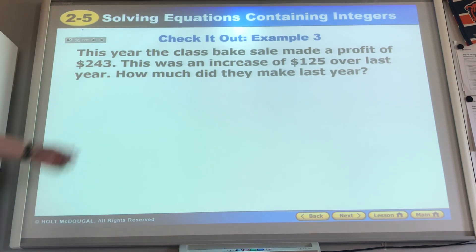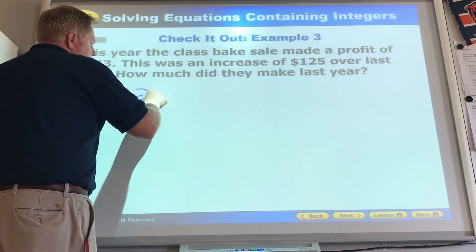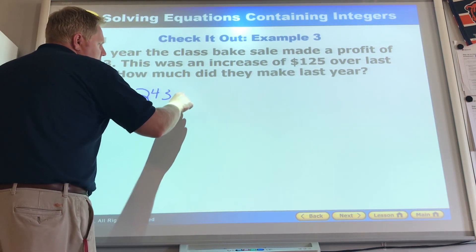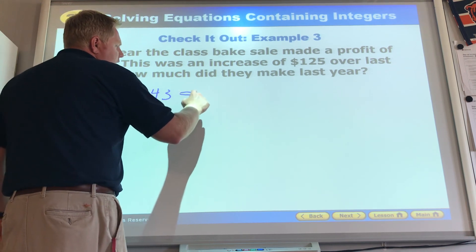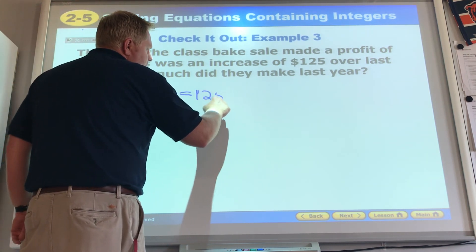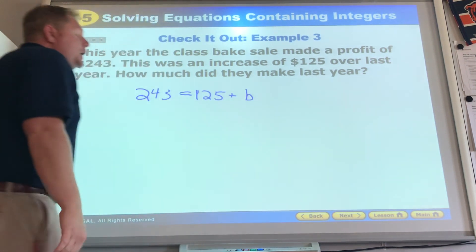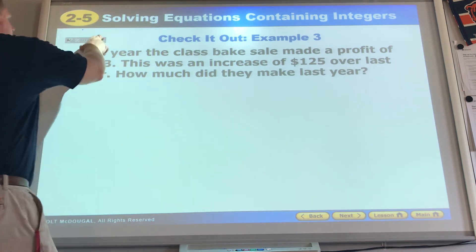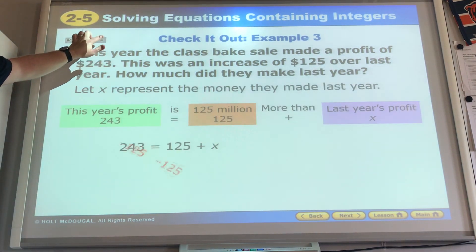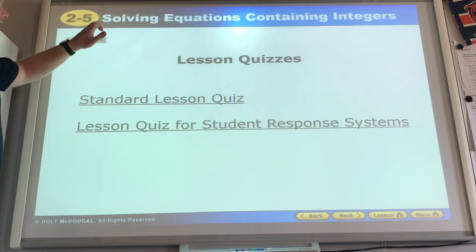This year our bake sale made a profit of $243. This was an increase of $125 over last year. $243 was what we made this year. It was the amount that was bigger. Then we had an amount. We didn't know what it was. But we knew that if we added $125 and the amount from the bake sale last year, we would get that amount. Seeing this, hopefully you see it's a subtraction problem again. Because we're going to use the inverse operations. It is a subtraction problem. $118 what they made last year. You're ready to go.